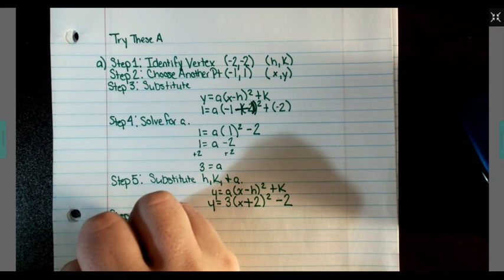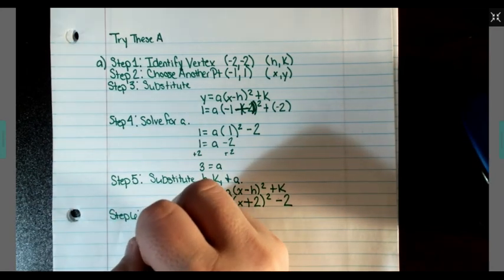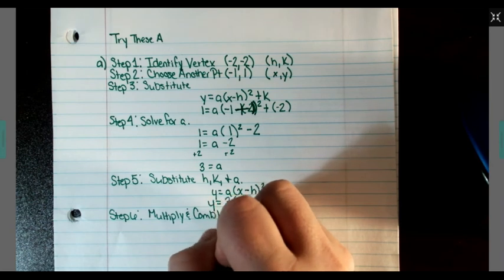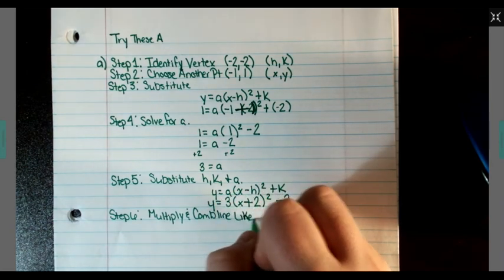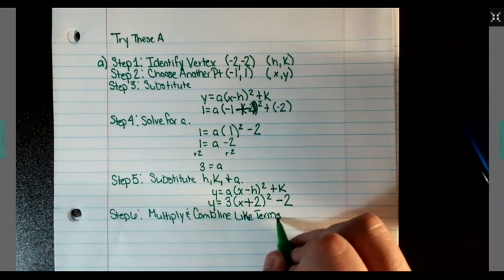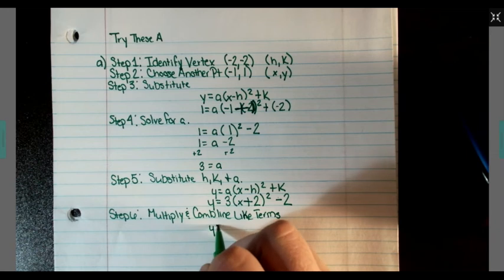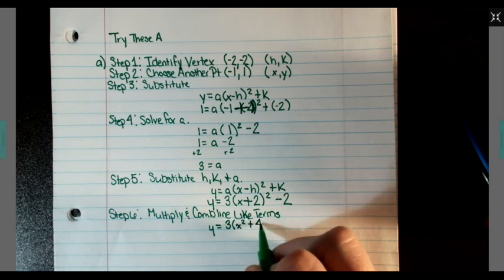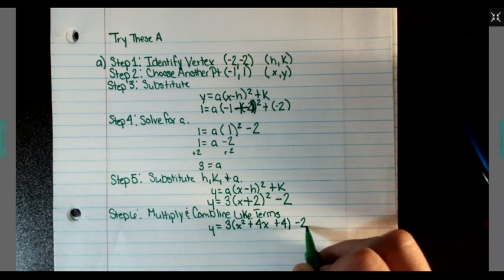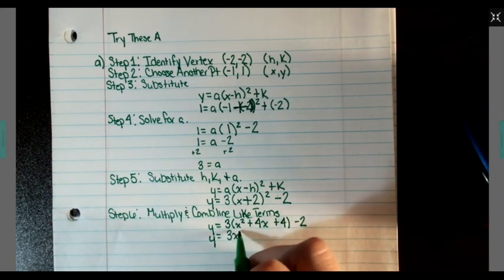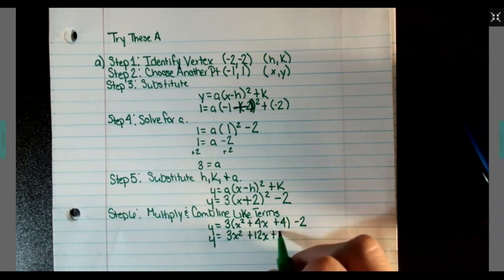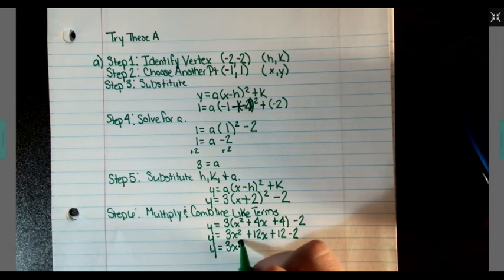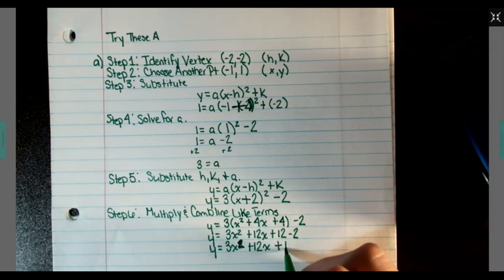Step 6 says to multiply and combine like terms. So we've got Y equals 3 times X squared plus 4X plus 4 minus 2. We've got Y equals 3X squared plus 12X plus 10.